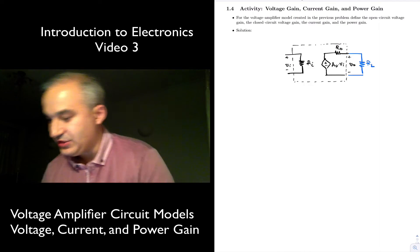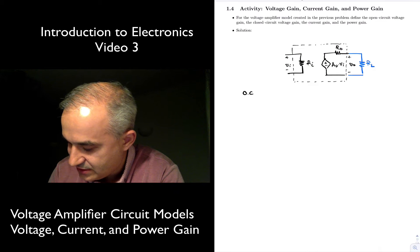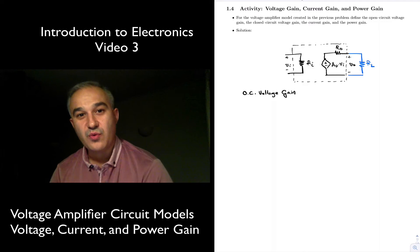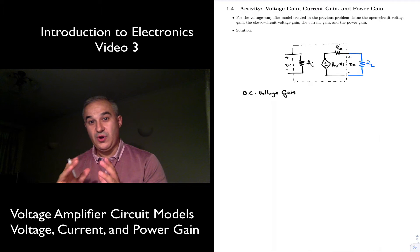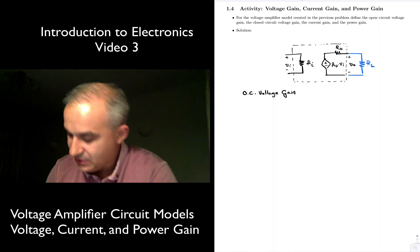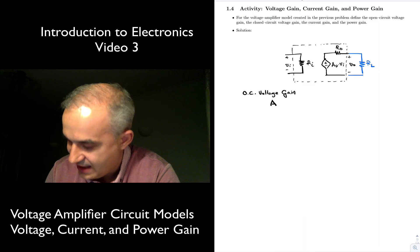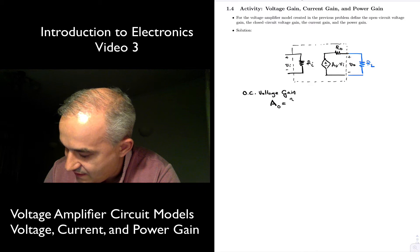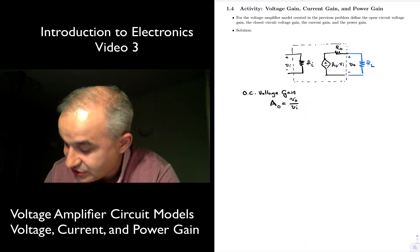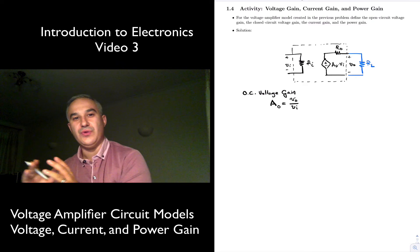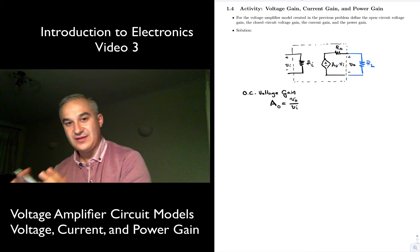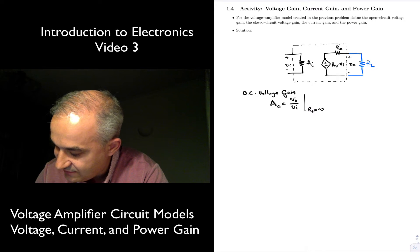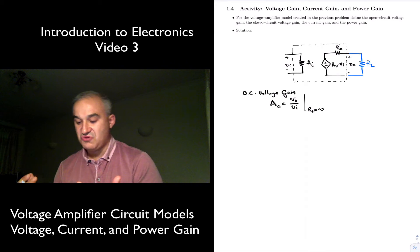First part: the open circuit voltage gain. When we talk about gain, it is always going to be a ratio — the output voltage over the input voltage. So I'm going to define AO for the open circuit voltage gain. The open circuit voltage gain is the output voltage over the input voltage when the load RL is disconnected. There is no load — or equivalently, RL is infinity.